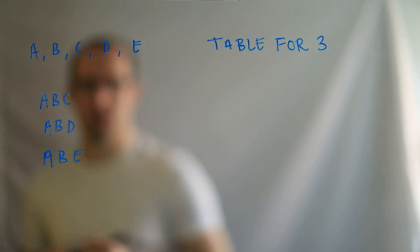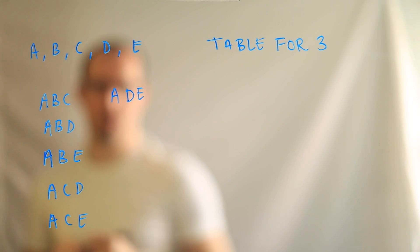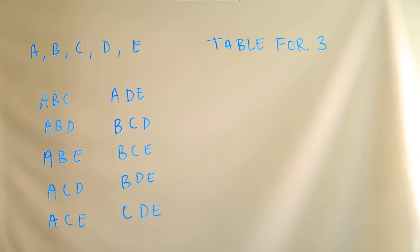An interesting aspect of this problem is that there's just a heck of a lot of ways to combine subsets of your friends. So for instance, if you had a table for three, and you had five people to seat at it, it turns out there's ten different ways to seat those people at the table.